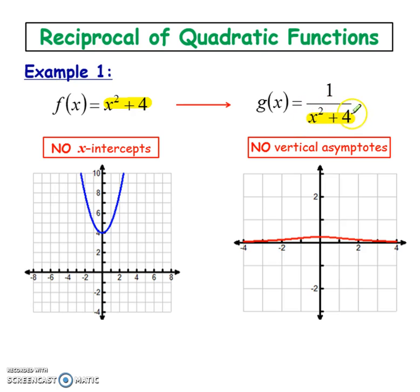So this will always be positive. And when I add the 4, that's always going to be positive as well. This will never become a 0. So in that case, I'm going to have no vertical asymptotes. The fact that the original quadratic has no x-intercepts really links with the fact that there are no vertical asymptotes.